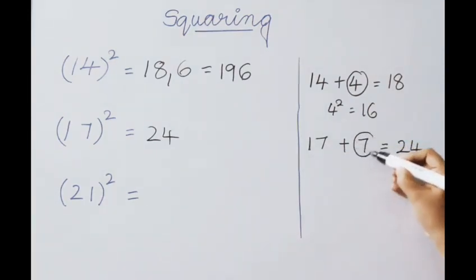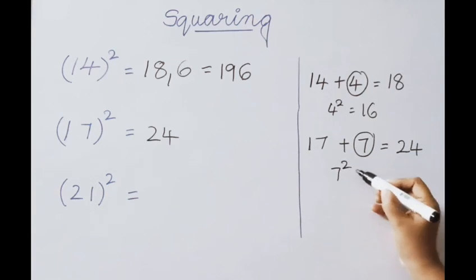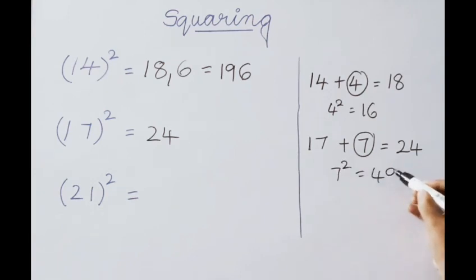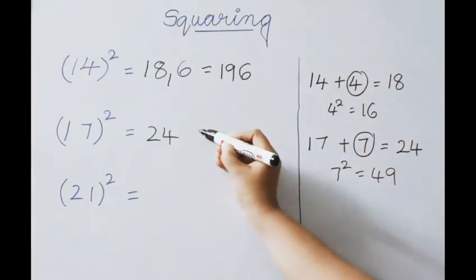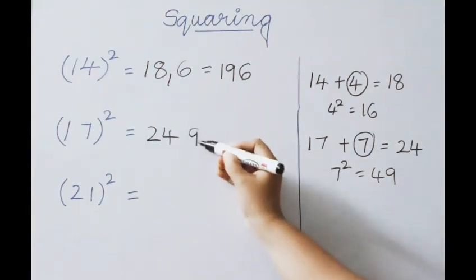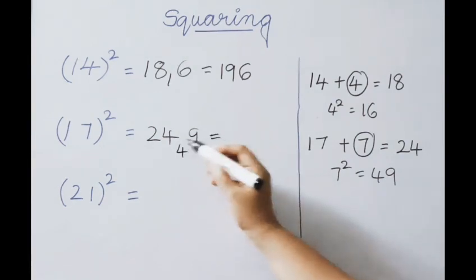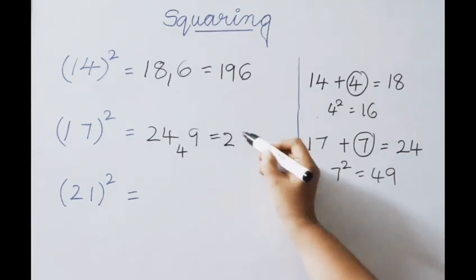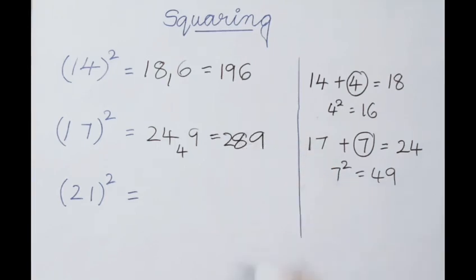Now, what is the square of the excess value? 7 squared is 49. Since the base is 10, only 1 digit is allowed. Write down 9 and carry 4. Add: 4 plus 4 is 8. Write down the last value 9. So, 17 squared is 289.